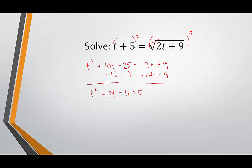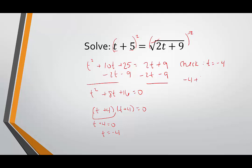That gives us t squared plus 8t plus 16 equals 0. This is a perfect square trinomial, which factors as (t plus 4)(t plus 4). Since it's the same factor, we only need to set one equal to 0: t plus 4 equals 0, so t equals negative 4. This is an all-or-nothing situation — either t equals negative 4 is the solution or we have no solution. Checking t equals negative 4: negative 4 plus 5 equals the square root of 2 times negative 4 plus 9, which gives 1 equals the square root of 1 equals 1. It works. We have one solution: t equals negative 4.